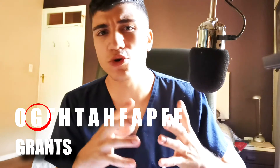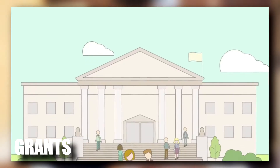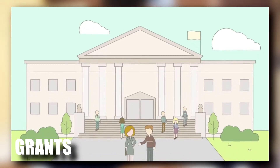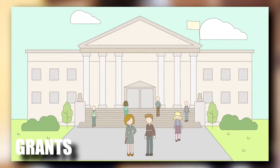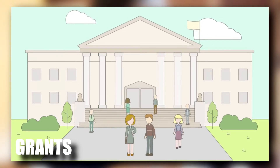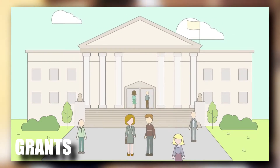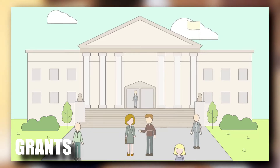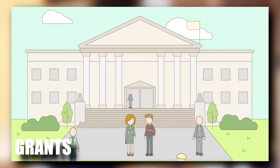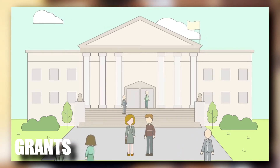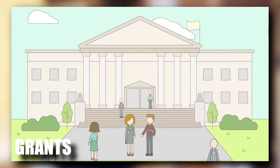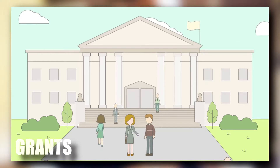G stands for grants. This has to do with any social grants or welfare. This could also involve subsidies, allowances, sponsorships, bursaries, donations, etc. Some examples of these in South Africa are child support grants, disability grant, older persons grant, and care dependency grant.